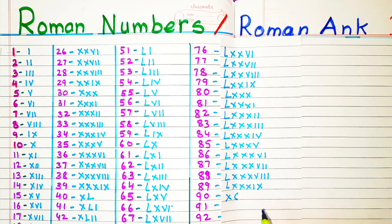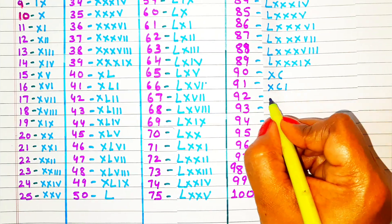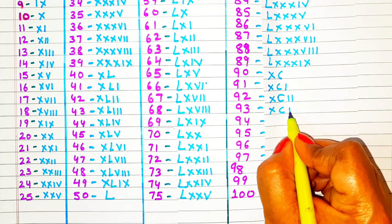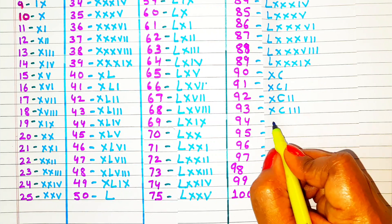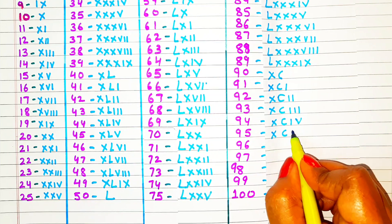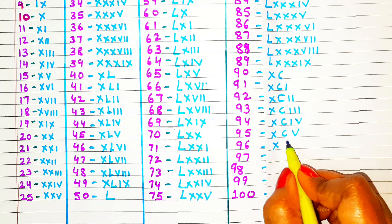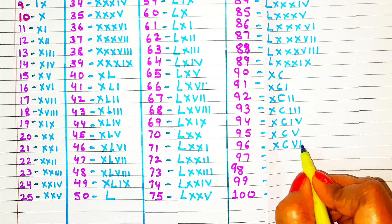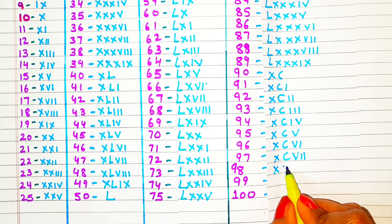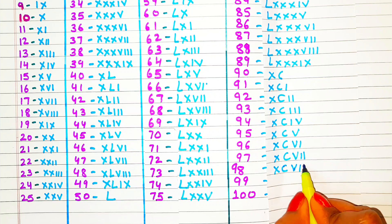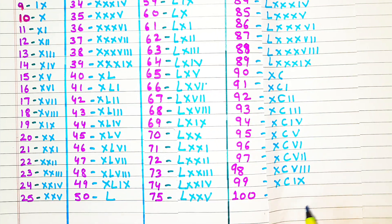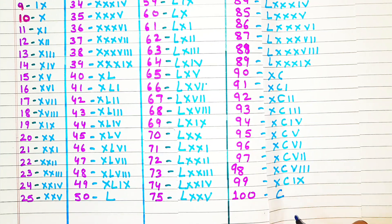91: XCI. 92: XCII. 93: XCIII. 94: XCIV. 95: XCV. 96: XCVI. 97: XCVII. 98: XCVIII. 99: XCIX. 100: C.